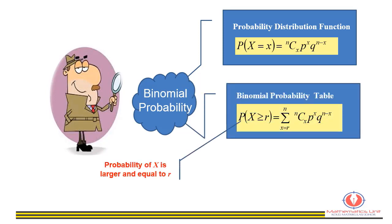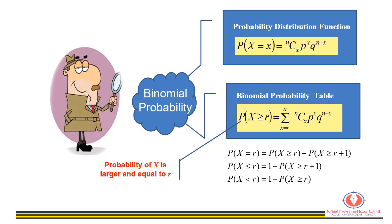We can find the binomial probability in two ways: by calculation using the probability distribution function formula, or by reading from the binomial probability tables. In the binomial probability tables, the probability is given as P(x ≥ r). To answer questions we apply three formulas: P(x = r) = P(x ≥ r) − P(x ≥ r+1); P(x ≤ r) = 1 − P(x ≥ r+1); and P(x < r) = 1 − P(x ≥ r).